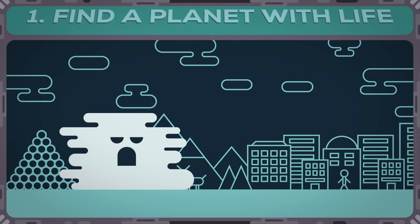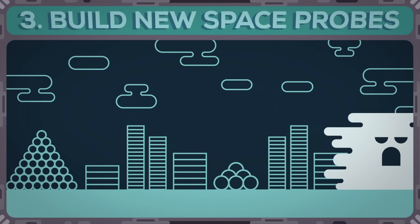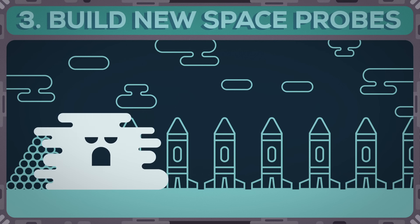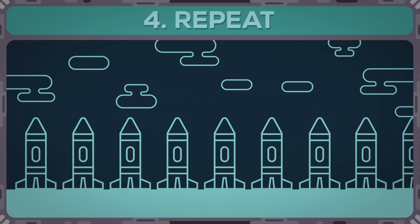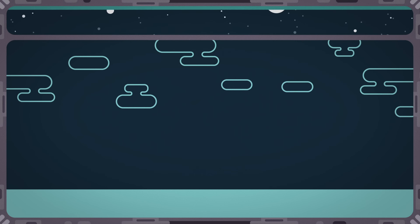One, find a planet with life. Two, disassemble everything on this planet into its component parts. Three, use the resources to build new space probes. Four, repeat. A doomsday machine like this could render a galaxy sterile in a few million years.